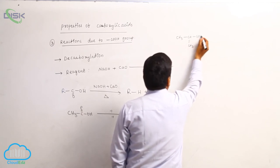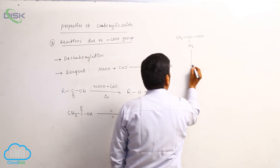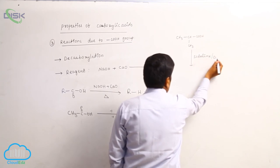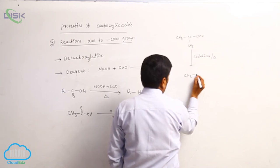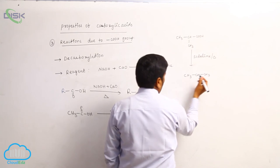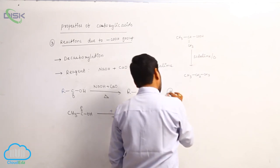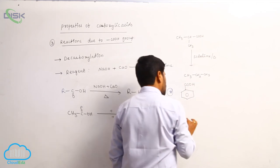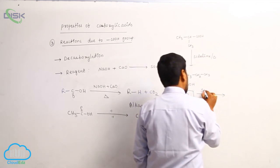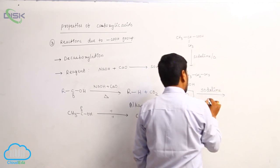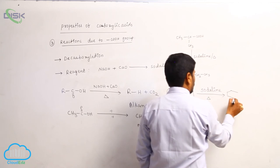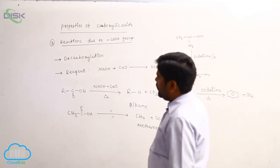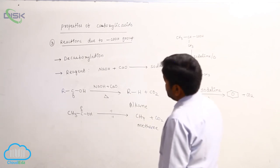Isobutyric acid treated with soda lime on heating converts into propane. Benzoic acid treated with soda lime on heating results in loss of CO2 to form benzene and CO2. These are the reactions related to decarboxylation.